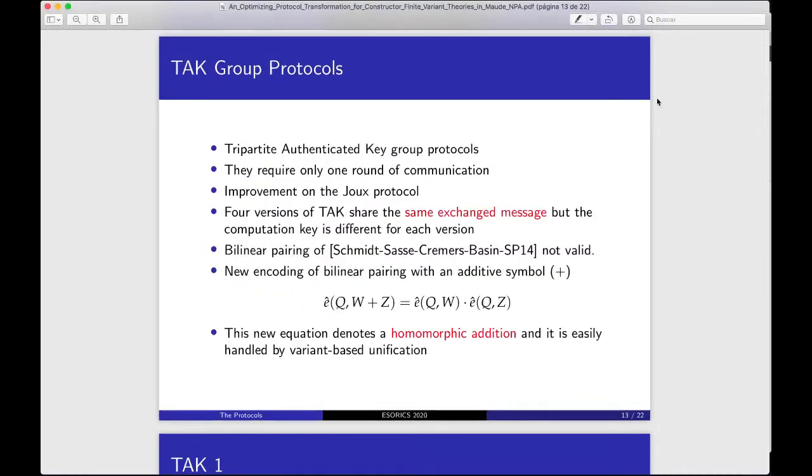The last protocol is a three-participated authenticate key group protocol. It is an improvement of the before protocol JOCKES. They only require one run of communication. The four versions of the TAC share the same exchanged message, but the computation key is different for each version. The bilinear pairing of Schmidt, Sasse, Kremer, Bacelar in ASIACCS14 is not valid. Because one version of the TACs needs a new encoding of bilinear pairing with an additive symbol.